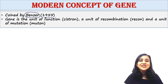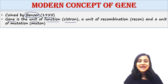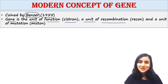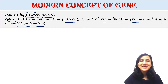The modern concept of gene was coined by Benzer in 1955. According to him, gene is the unit of function, also called cistron; a unit of recombination, also called recon; and a unit of mutation, also called muton. Let's talk about them one by one.